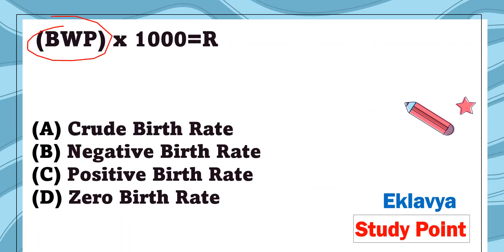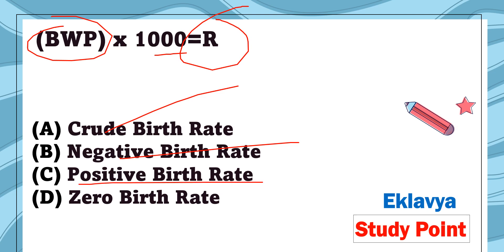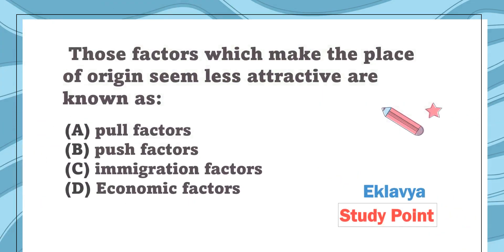Question 7: B/WP in 2000 equals R — option A: crude birth rate, option B: negative birth rate, option C: positive birth rate, option D: zero birth rate. The correct answer is crude birth rate.